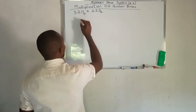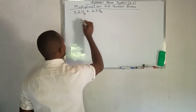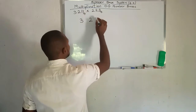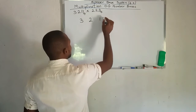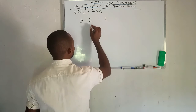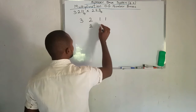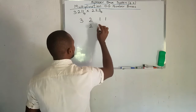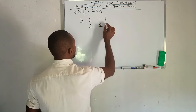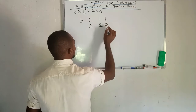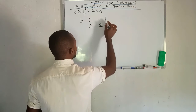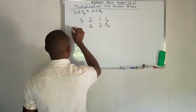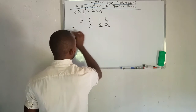We have 3,2,1,1 base 4 times 2,2,3 base 4. So we have 2,2,3 base 4 times this.